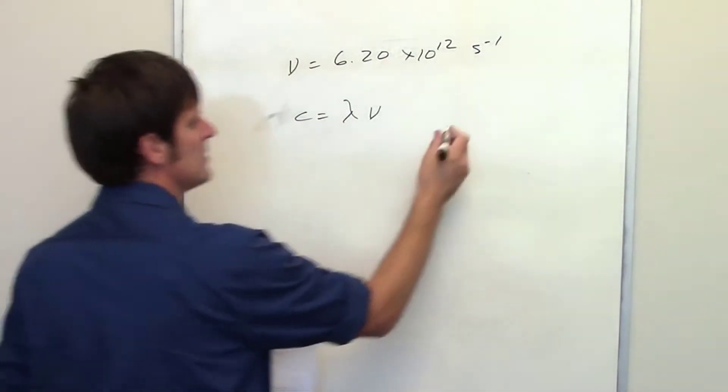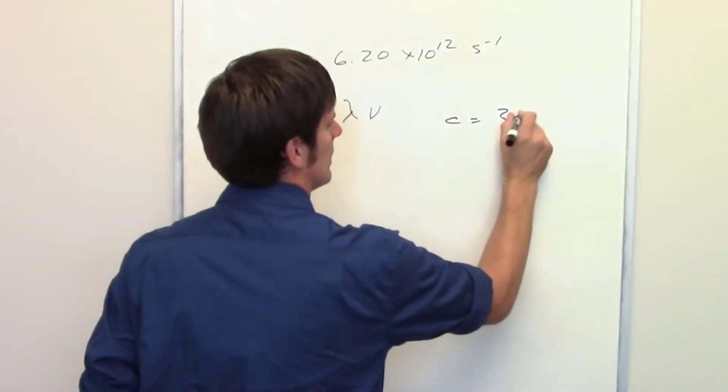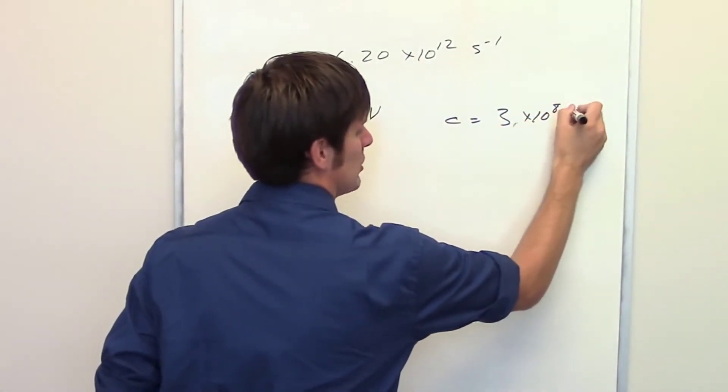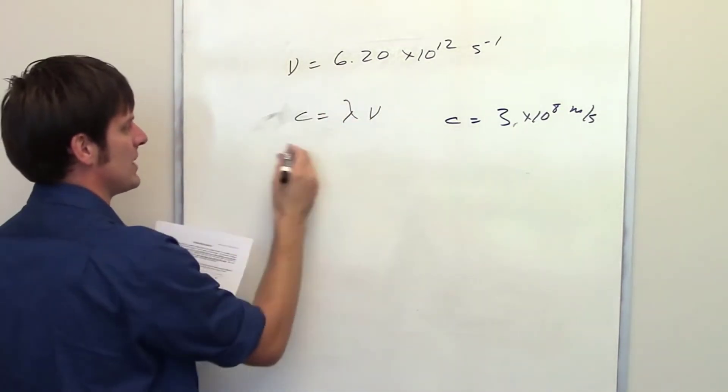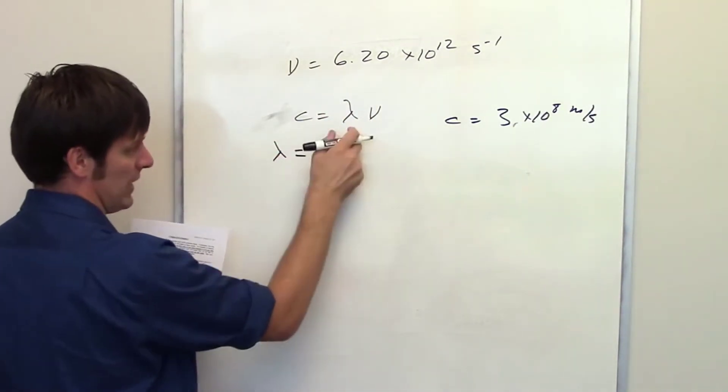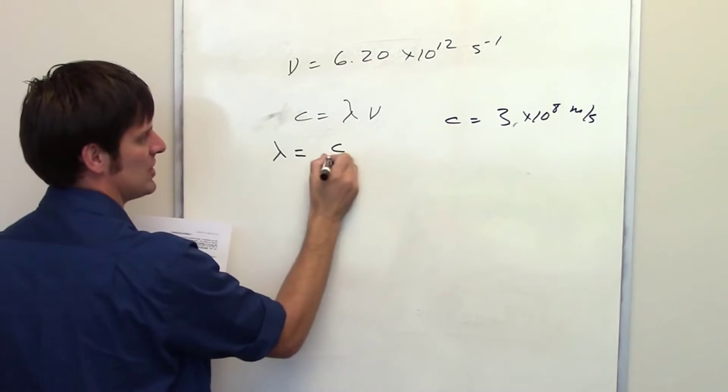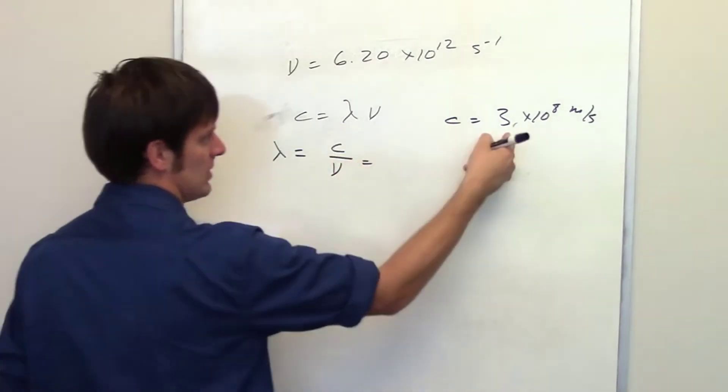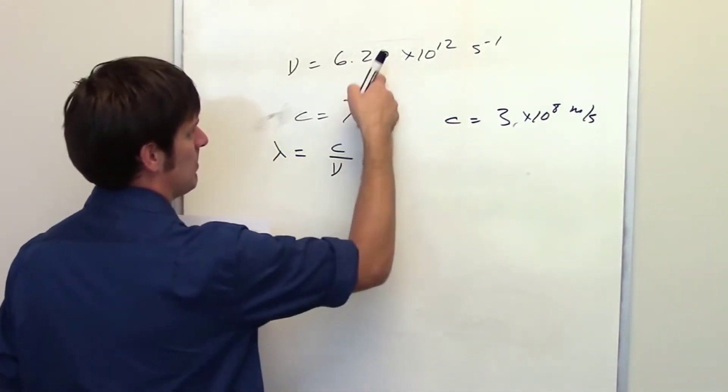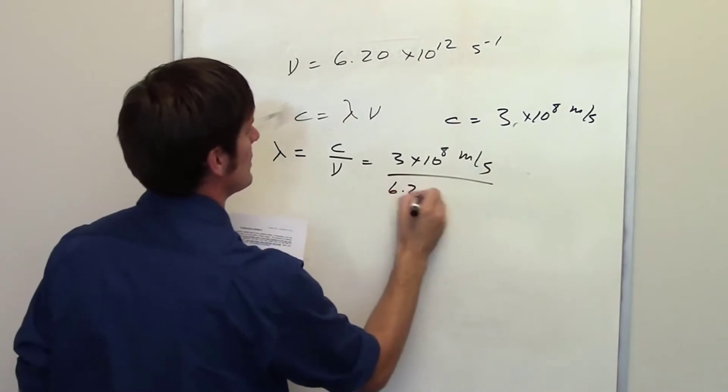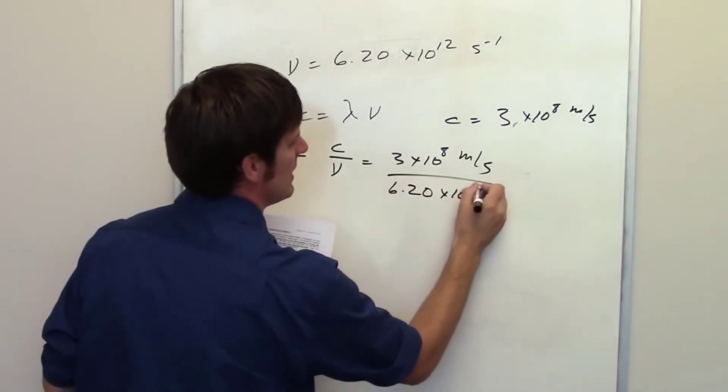We know what c is. It's the speed of light, 3 times 10 to the eighth meters per second. In this particular case, we've been given a frequency and we're asked to calculate the wavelength. Wavelength algebraically is going to be equal to c divided by nu, which is the speed of light divided by the frequency, which is 6.2 times 10 to the 12 inverse seconds.